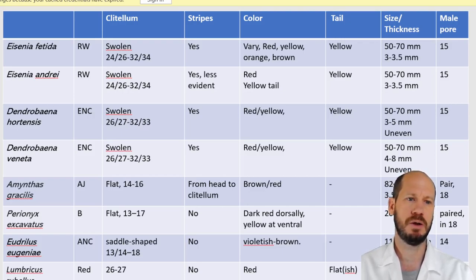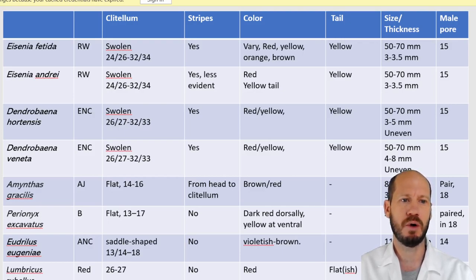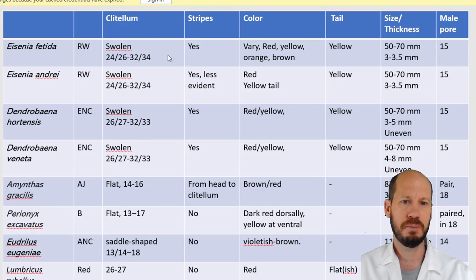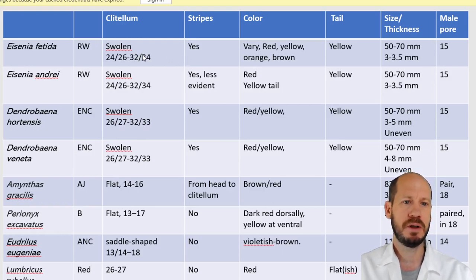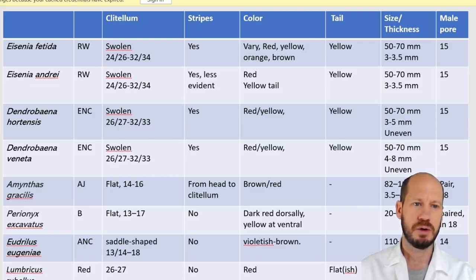Usually what you see online is people showing movement patterns, colors, shapes, and behaviors to identify worms. But there are other simple features — for example, the position of the clitellum and the male pore — that will be a good tell about whether your worms are from one species or another. I'll start from the basics.